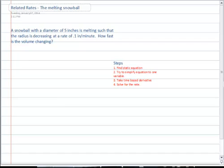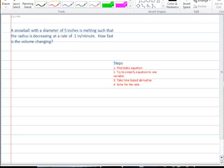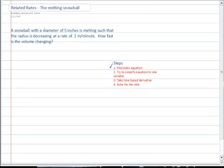This problem is set up so that we're going to go through the steps, we're going to understand the problem, and we're going to try to do the following steps to solve the related rates problem. The first step would be to understand the problem and then try to find a static equation that relates all the variables of the problem.